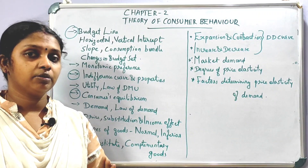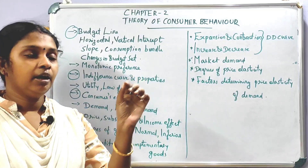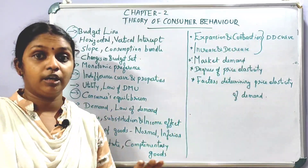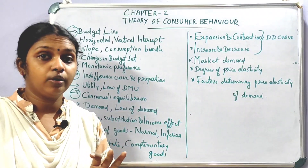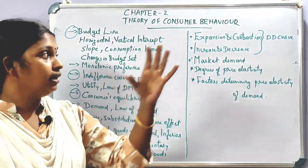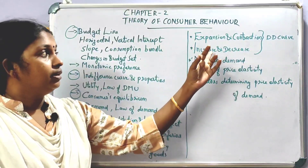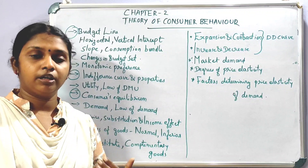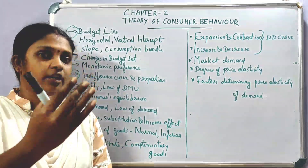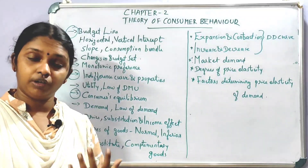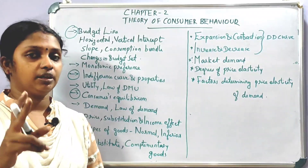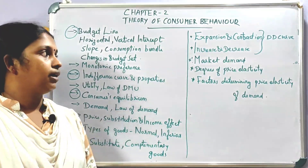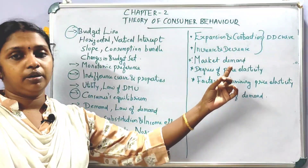There is movement along the demand curve and shift in the demand curve. This covers expansion and contraction of demand, as well as increase in demand and decrease in demand — the demand curve shifts right or left. Then there is market demand, where we consider all individual demands together.